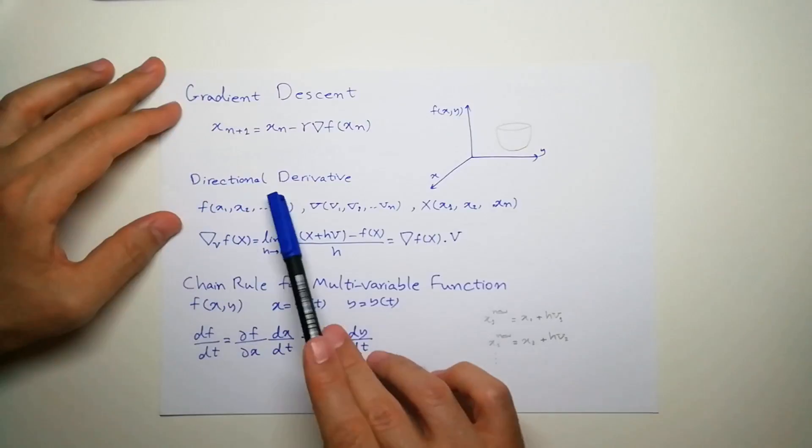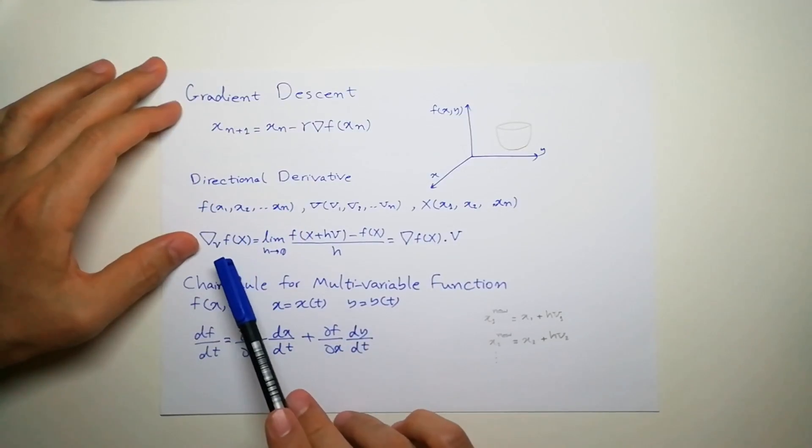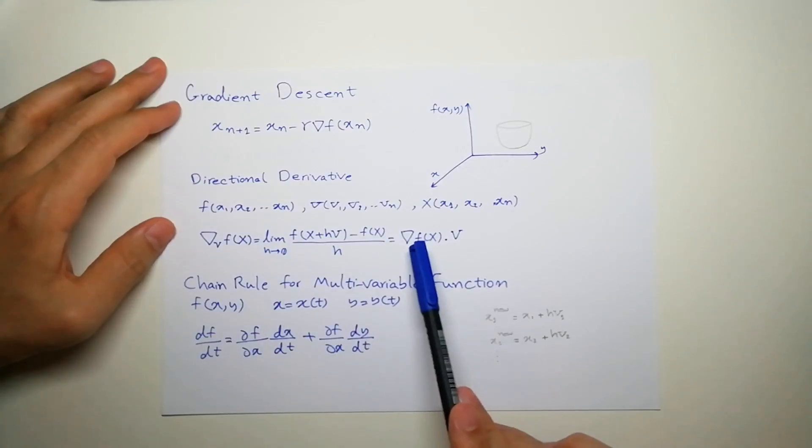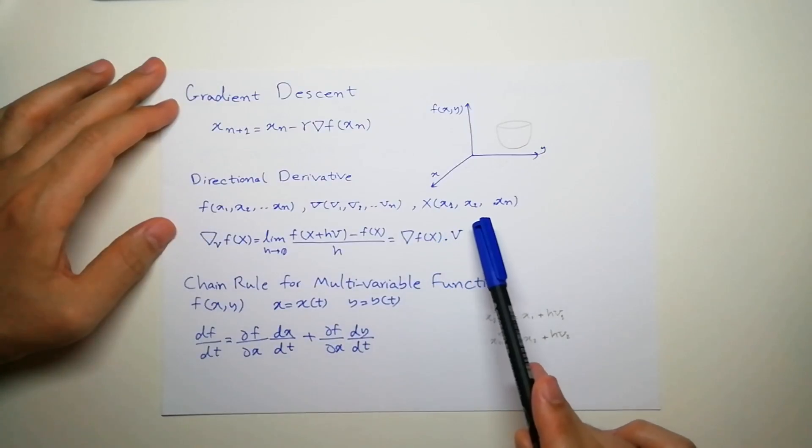So directional derivative, which I denoted by this notation, is equal to the gradient of the function multiplied by dot product by that vector.